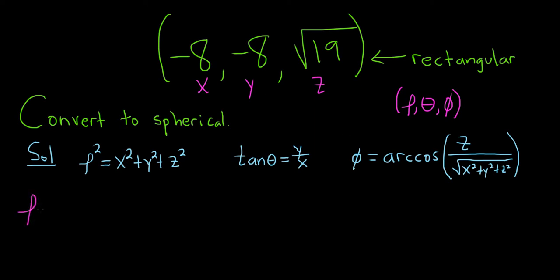So rho is equal to the square root of negative 8 squared plus negative 8 squared plus the square root of 19 quantity squared. So this will be the square root of 64 plus 64 plus 19. So rho is equal to the square root of, if you put this in your calculator or add it up in your head, I'm getting 147.